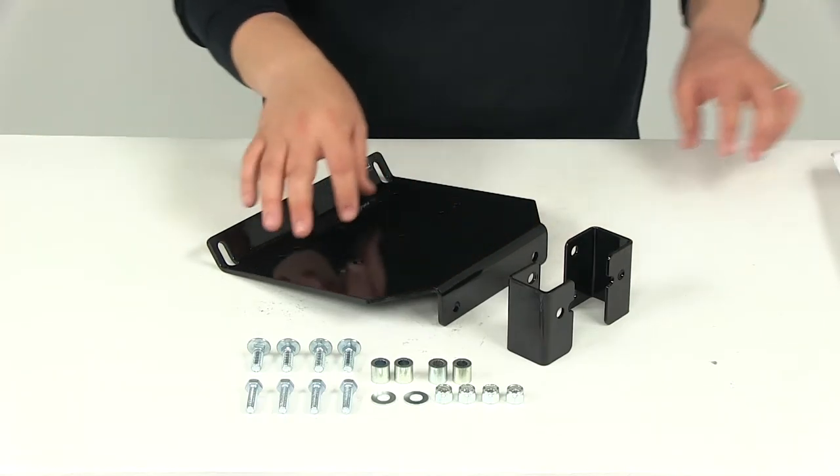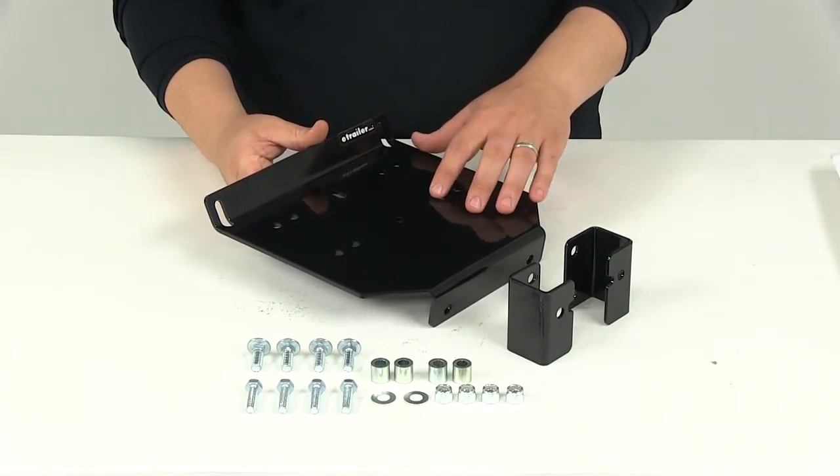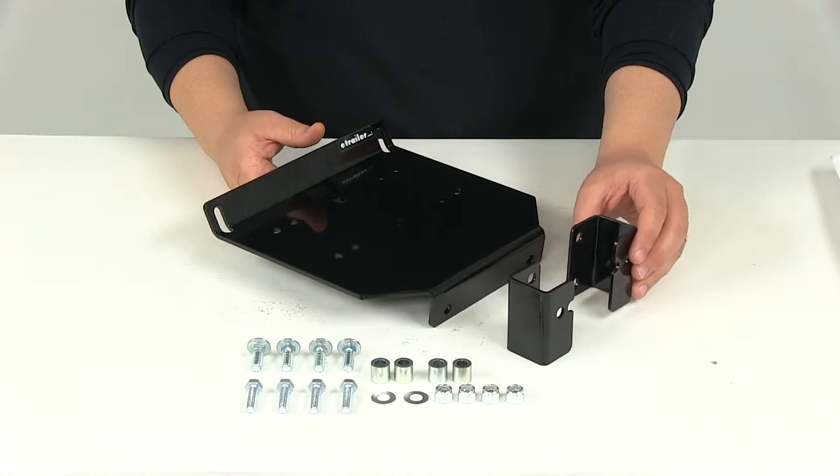Now, the front and the back of the mount is going to bolt through the existing holes in the chassis. This mount is going to accept both standard and wide roller fairleads using the adapter brackets right here.